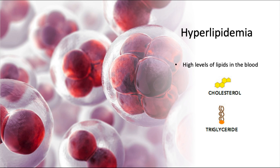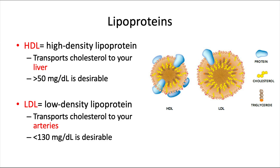These lipids are packaged into spherical particles called lipoproteins for transport through the bloodstream. Lipoproteins are substances made of protein and fat that carry cholesterol and triglycerides through your bloodstream, and they're classified by their density. The lipid or fat components are less dense, and the protein components are more dense.